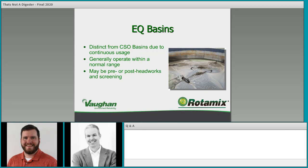EQ basins are generally before primary sedimentation, and all your primary solids will still be in that fluid — those are the most readily settleable within your wastewater. You need good mixing to maintain distribution and make sure you're not overloading your headworks. For example, if your pounds-per-day-under-aeration limit is being exceeded and you're detaining flow to meter it, but then sending very concentrated settled sludge to the facility, you might overwhelm the system anyway.